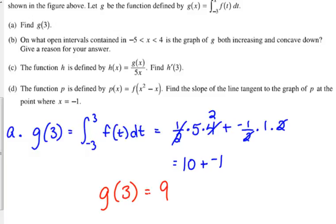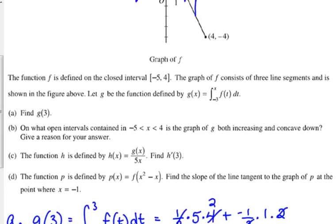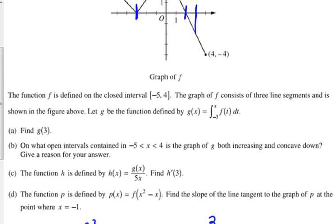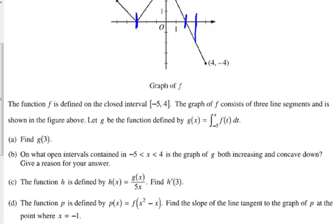Okay, let's look at b. On what open intervals contained between negative 5 and 4 is the graph of g both increasing and concave down? If I'm trying to determine where a function is increasing, what am I looking for? Where the derivative, g prime, where the derivative is positive. And what about concavity? If it's concave down, g prime is decreasing. So to find out where g is increasing, that's where g prime is positive. And it's concave down where g prime is decreasing.